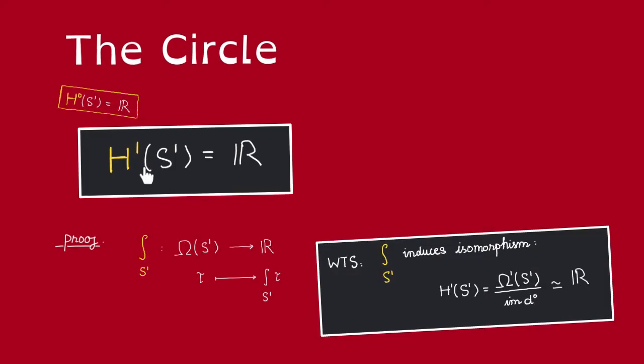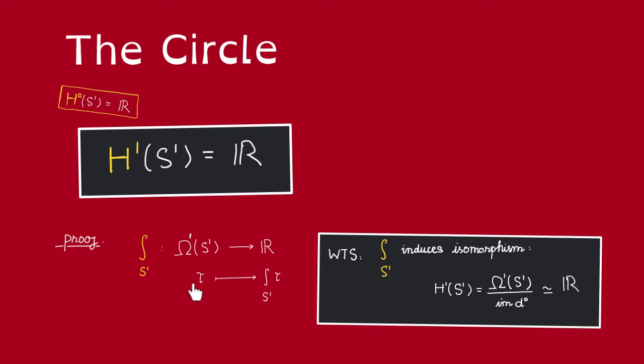Our claim is that H^1 of the circle is isomorphic to R, and that isomorphism is induced by the integration map. This map sends every one form tau on the circle to the integral of tau along the circle. We claim that this induces an isomorphism between the H^1 cohomology group of the circle and R.